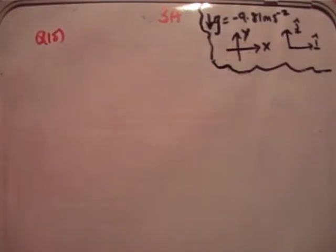So the question reads that a particle is projected from the top of a vertical cliff 82.5 metres above sea level with initial speed of 8i-hat plus 8j-hat metres per second. How far from the foot of the cliff will it hit the sea?